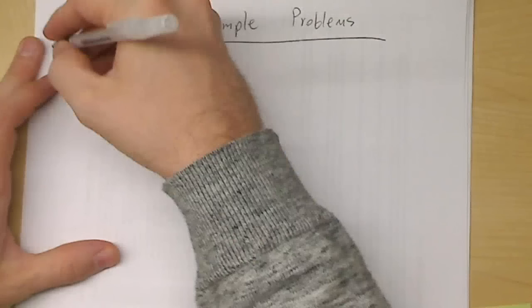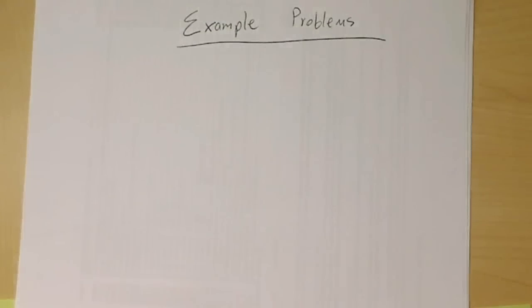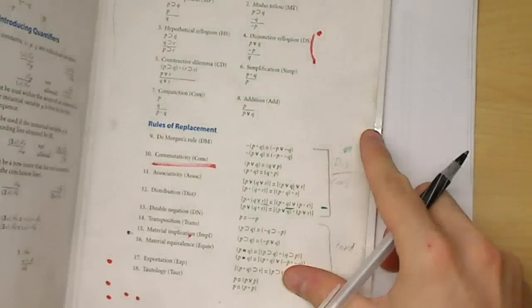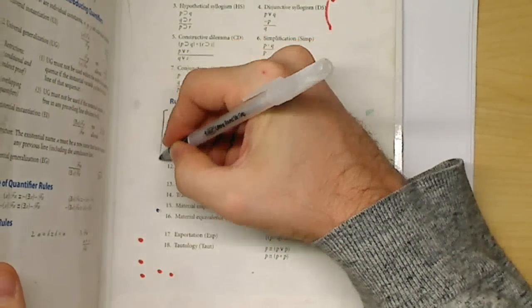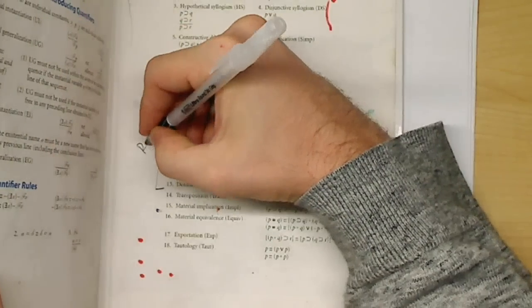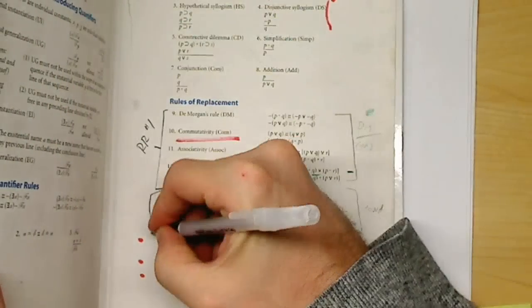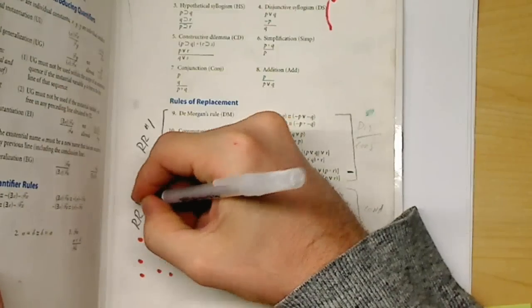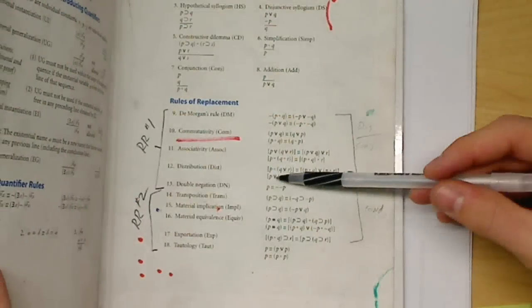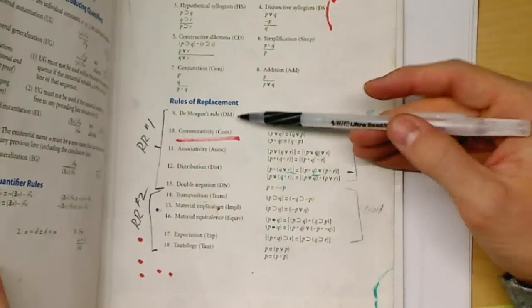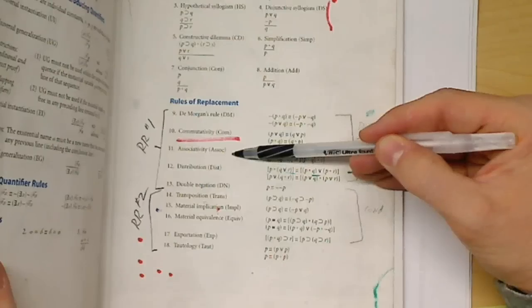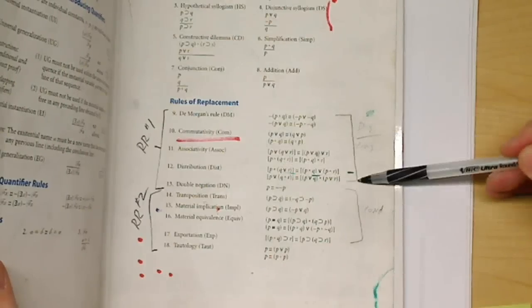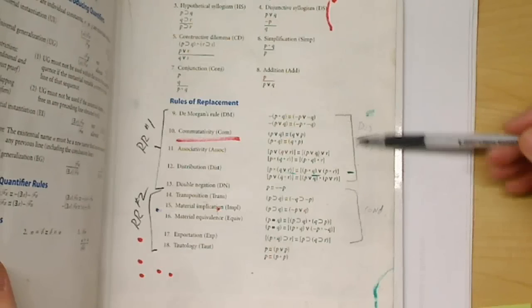Let's start off with the rules of replacement one. Just to get a sense of what it entails — the first five are rules of replacement number one, and the next are rules of replacement number two. For those of you taking the course online, you have a PDF version of this. I encourage you to print it out. The rules we're going to be looking at in this first problem are DeMorgans, commutativity, associativity, distribution, and double negation. I'm going to put this off to the side because I'm going to be using it.